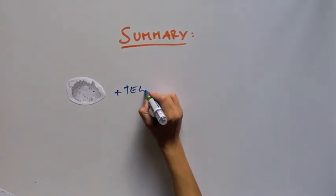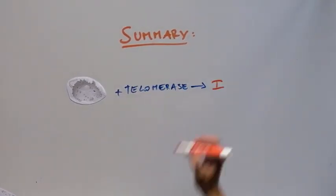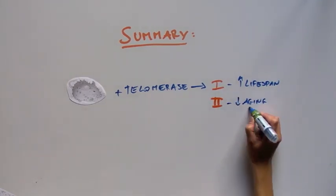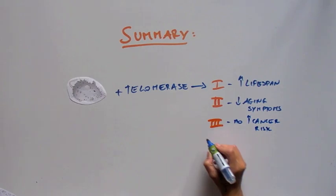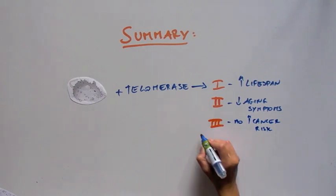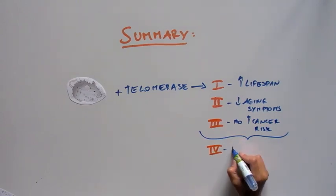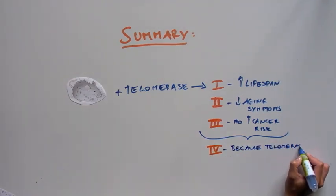So overall, what did this study show? It showed that adding telomerase in old mice does the following. Number one, it makes the mice live longer. Number two, these mice have fewer aging symptoms. Number three, these mice do not develop an increased risk of developing cancer. Number four, this is all because telomerase can prevent chromosomes from getting shorter as we age.